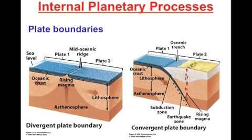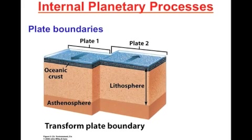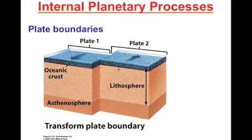The last type of boundary is called a transform plate boundary. This is when two plates move horizontally in opposite directions compared to one another — one plate moving in a downward direction while the other moves in an upward direction.